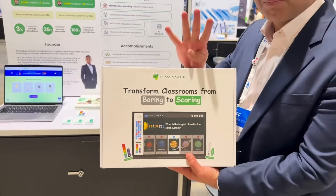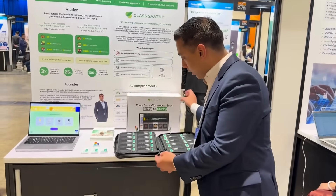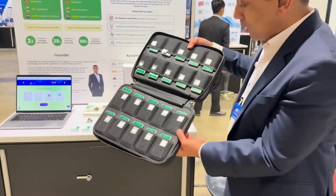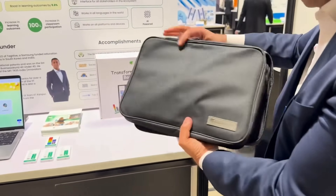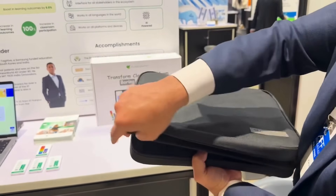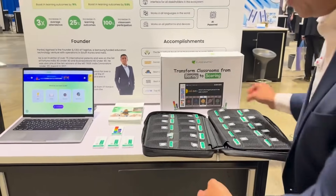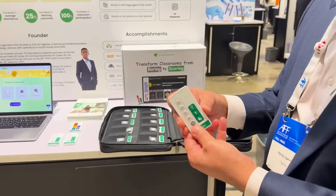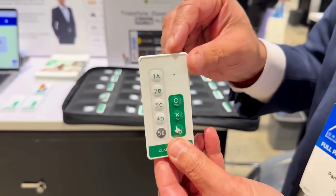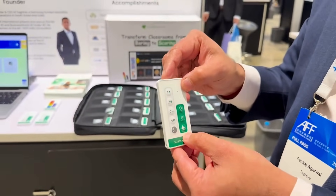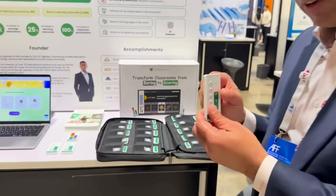There are four components of GlassSathy. The first is this box which has the hardware — this bag, this hardware bag. This bag is very well designed and contains 40 clickers. Let me show you a clicker in more zoom mode. This is a clicker. A clicker has 8 buttons: 1 to 5, 2 false buttons, and a help button. On the back side is the roll number. This is the first component of GlassSathy.